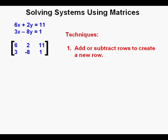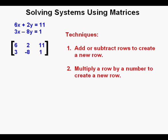The two types of things we'll do is add or subtract rows to create a new row, and also to change the scale of a row by multiplying a row by a number to create a new row.